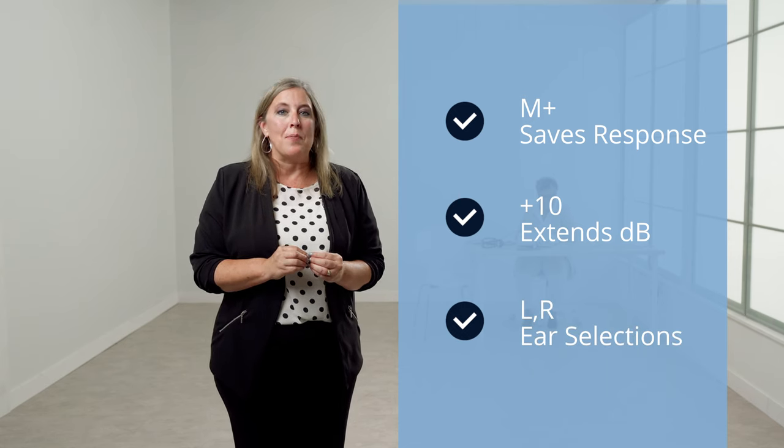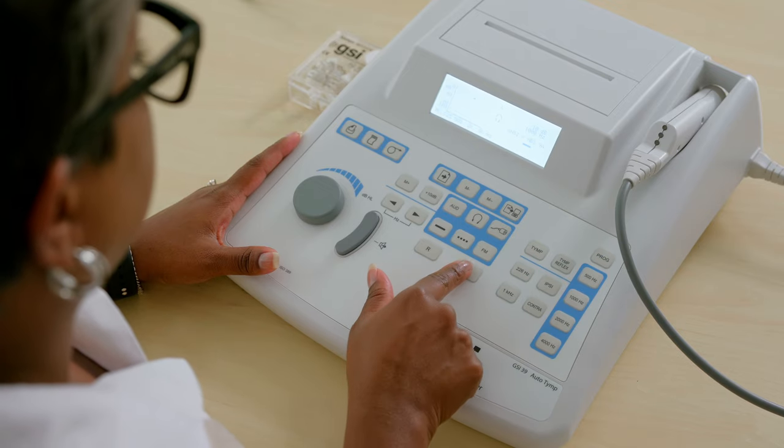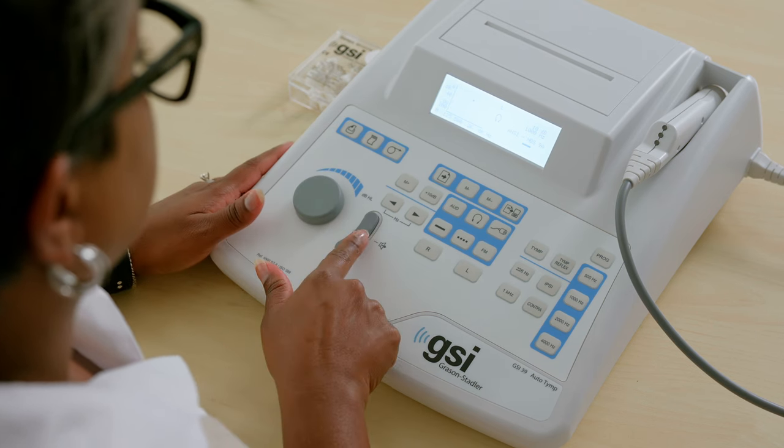The ear selection will be made by pressing the L button for the left ear and the R button for the right ear. The knob will adjust the presentation level, and the presentation bar will activate the pure tone stimulus when pressed.